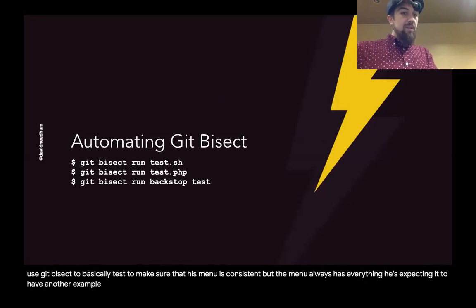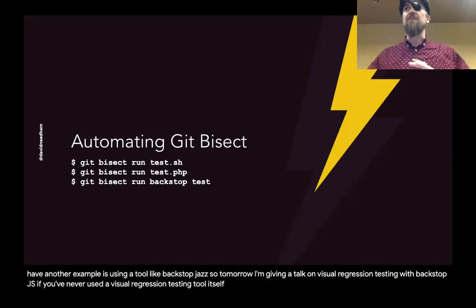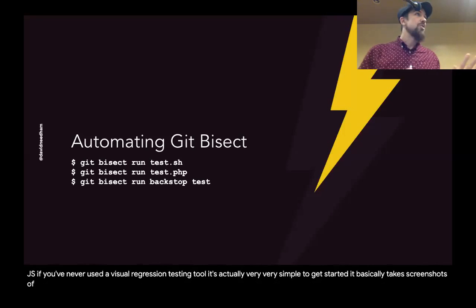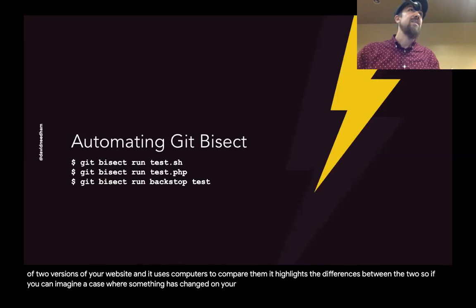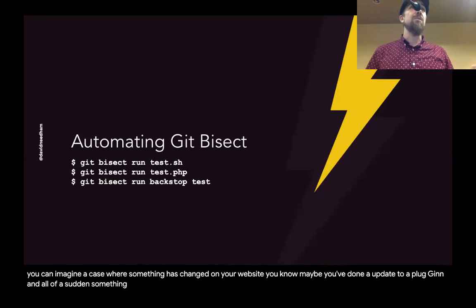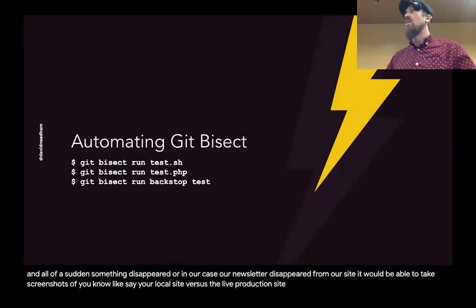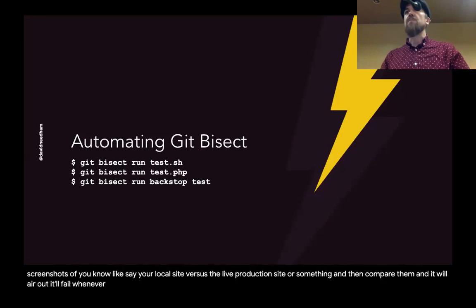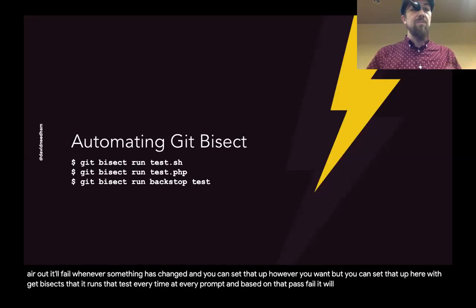Another example is using a tool like backstop.js. Tomorrow I'm giving a talk on visual regression testing with backstop.js. It's actually very simple to get started — it takes screenshots of two versions of your website and uses computers to compare them, highlighting the differences. If something changed on your website — say you did a plugin update and something disappeared, or in our case the newsletter disappeared — it would compare your local site versus the live production site, and error out or fail whenever something has changed.